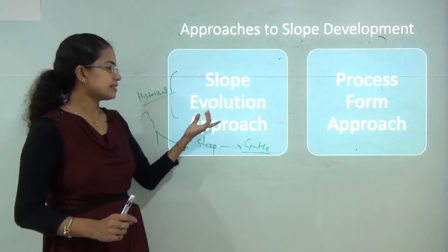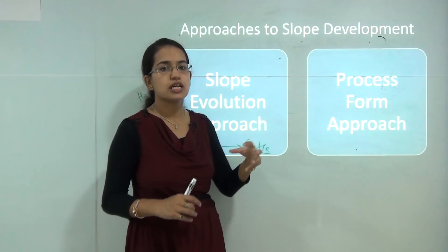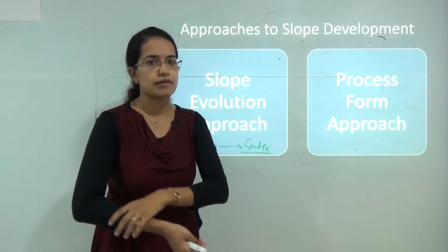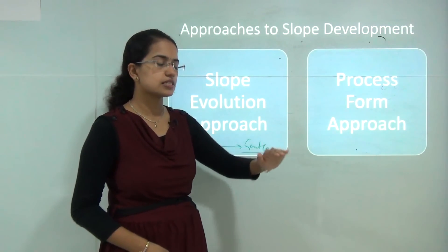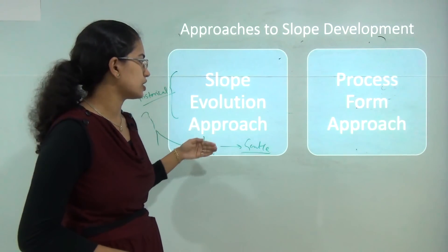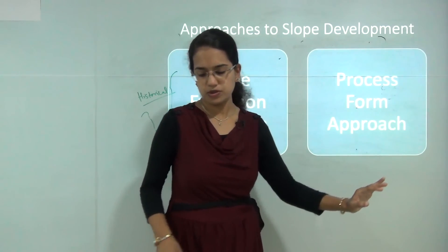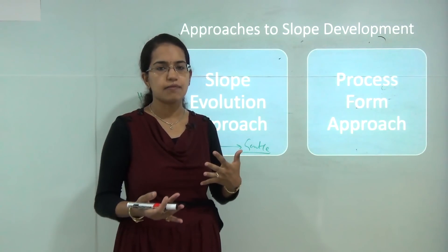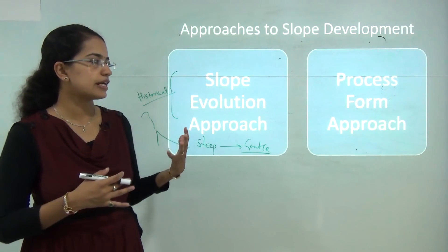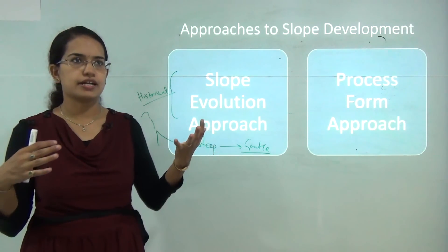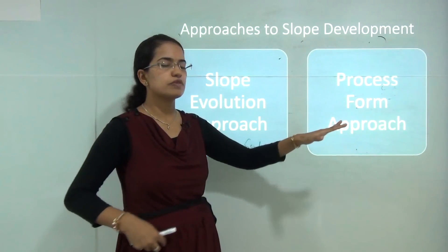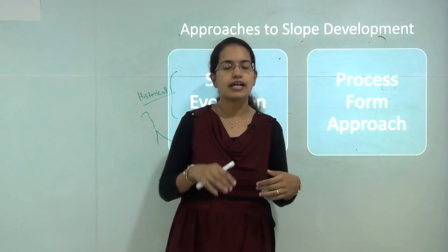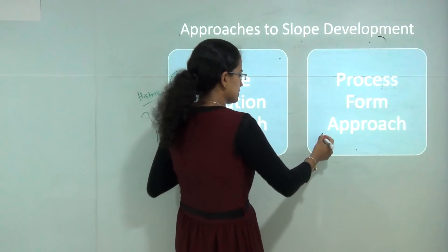The major issue under the slope evolution approach is how to date what the slope was during a particular time period — understanding slope with reference to time is very difficult. The process-form approach, on the other hand, talks about the direct relationship between slope and how it was formed. For example, a limestone region in humid areas would form different slopes compared to limestone in fluvial areas.